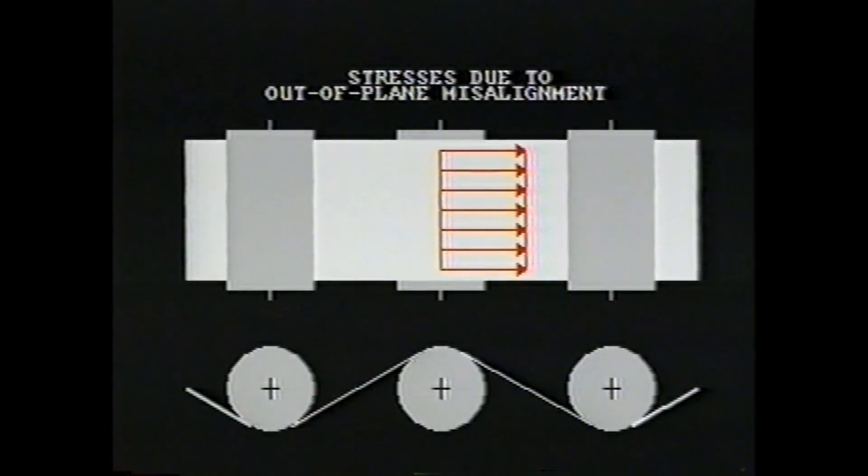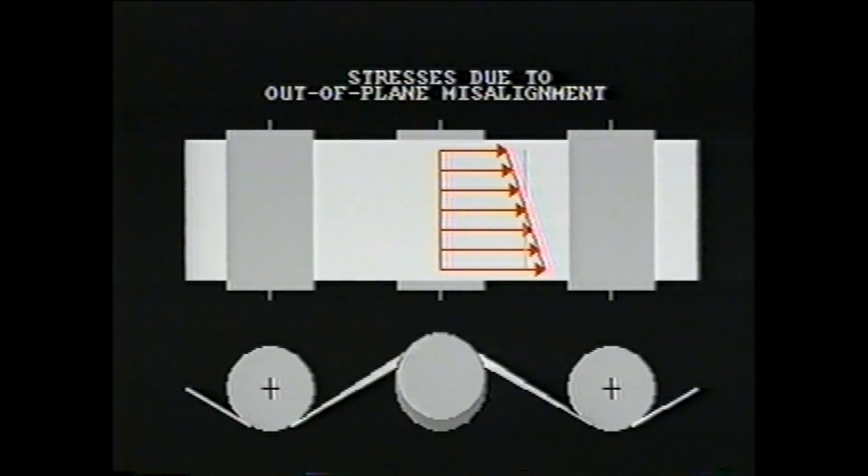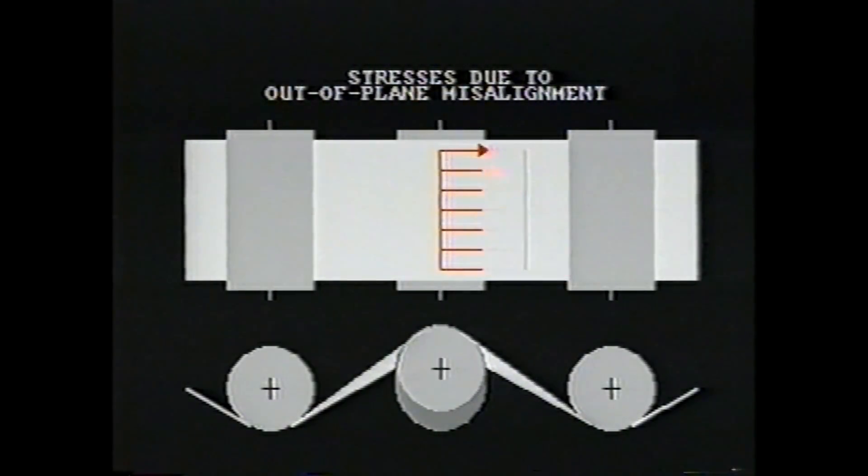Out of plane misalignment of rolls also affects web stresses. Looking at the center roll as it is raised out of the plane of the web, the stress is increased on the front side and decreased on the back side. Recall that the average stress remains unchanged as it is determined by the tension set point. Web stress is equal to web tension divided by caliper.